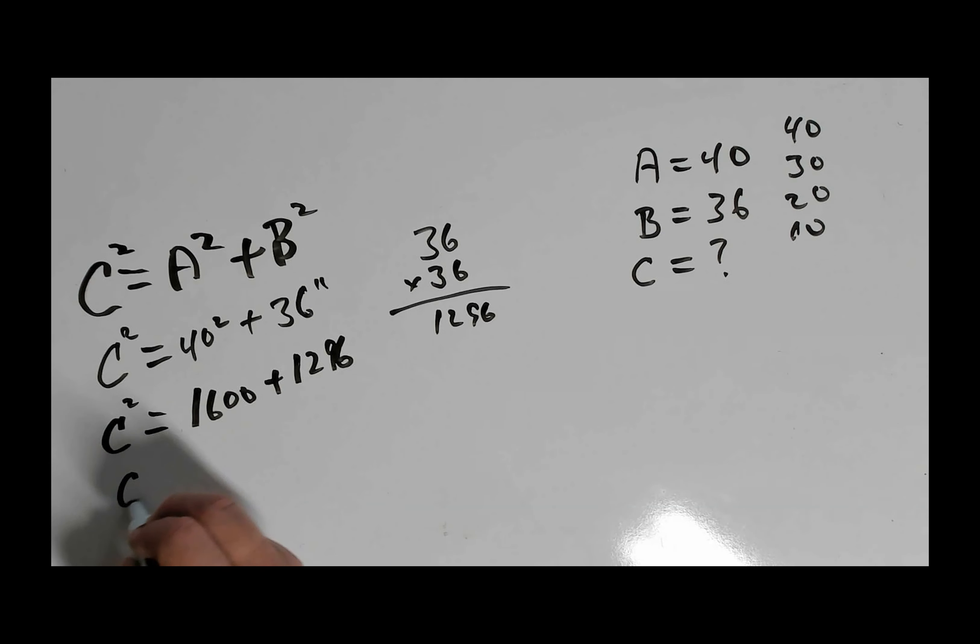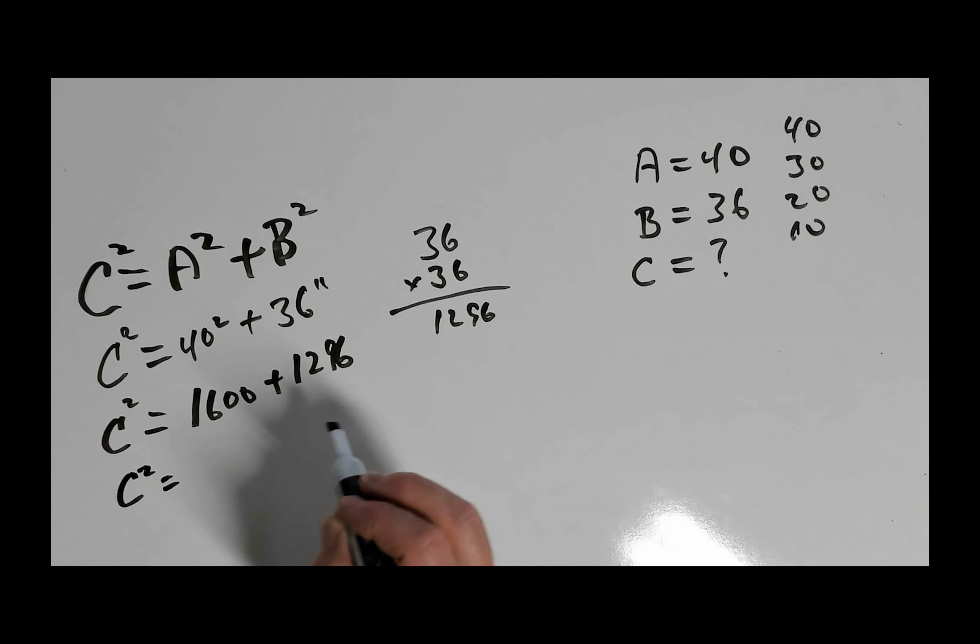So we have A and B for this particular guy wire figured out. So C squared is equal to 1,600 and 1,296. And I'm going to just do this on a calculator real quick. Okay, the answer comes to 2,896.